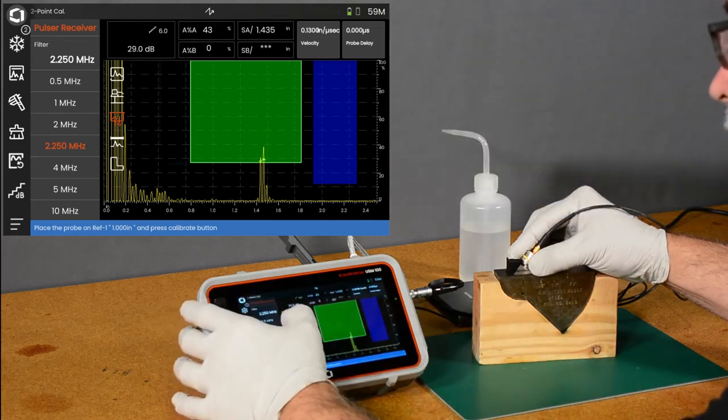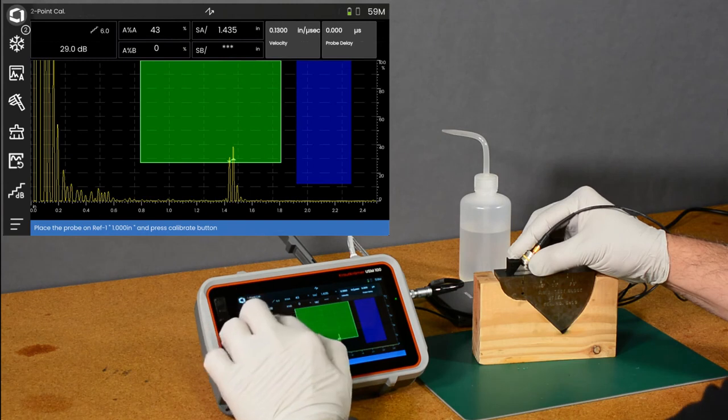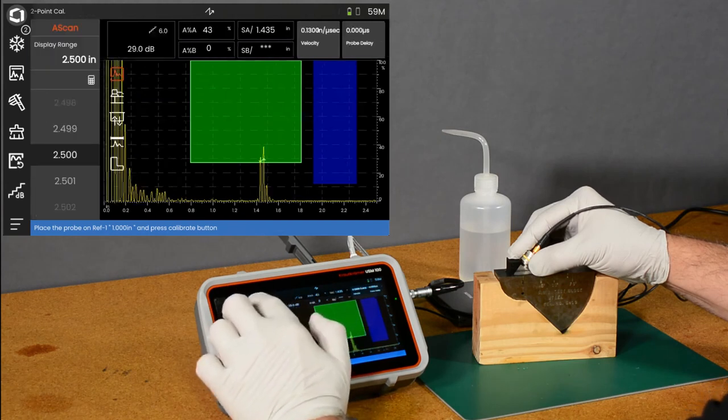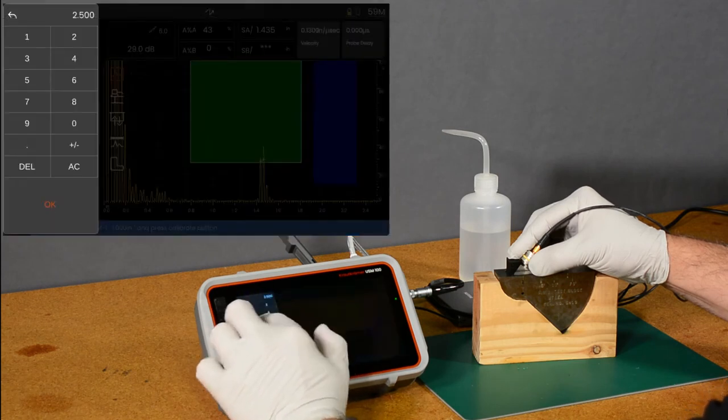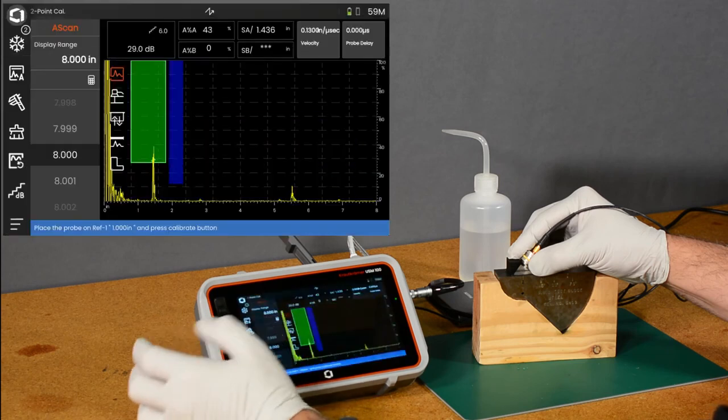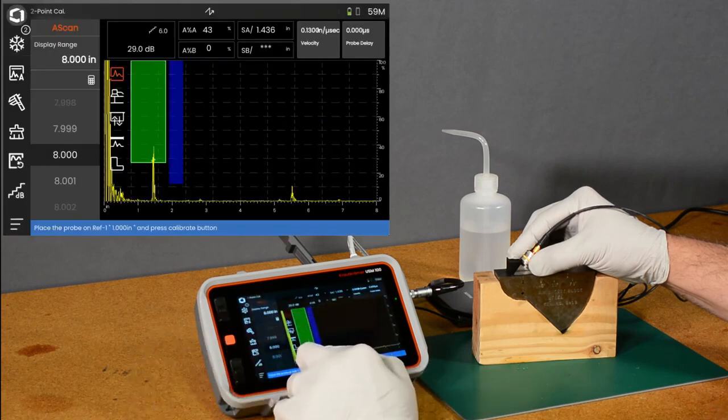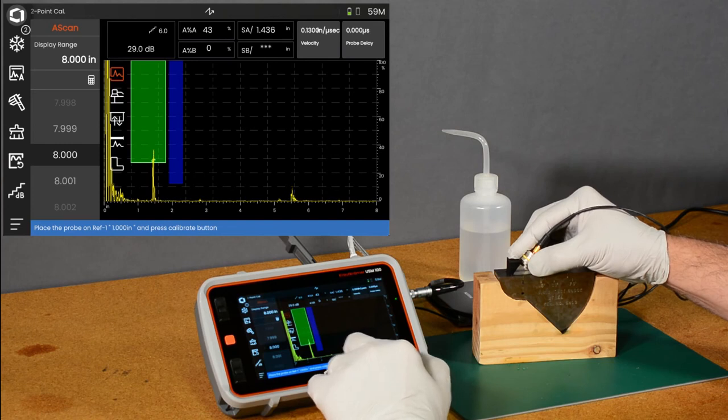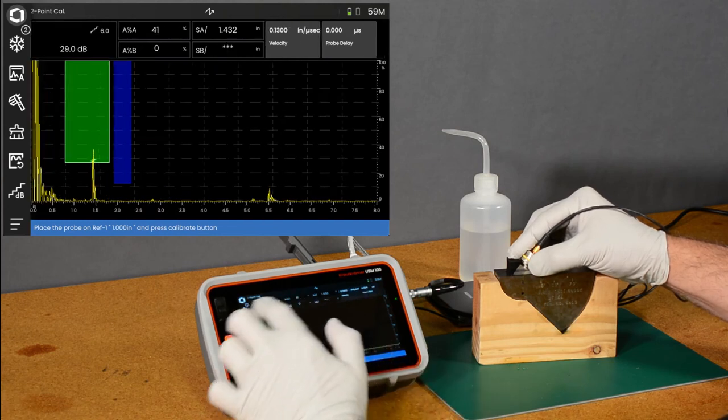So now if I extend my range out to say eight inches. There's my echo at one inch and I have an echo out here at five inches. So let's close that.